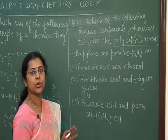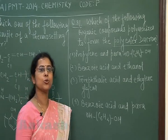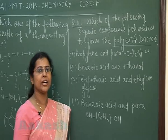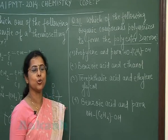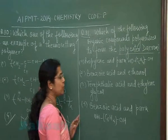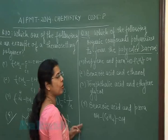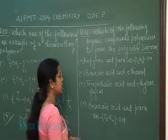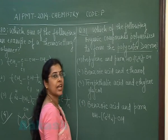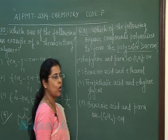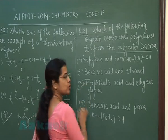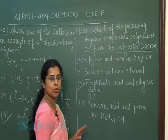Dacron is also known as Terylene, and Terylene is used in making fabrics. The monomers of this polymer should be terephthalic acid and ethylene glycol. This means the third option is the correct option.